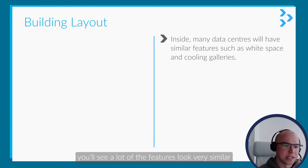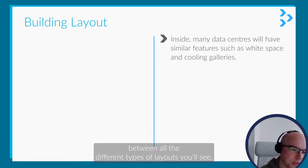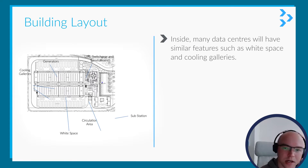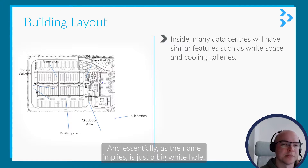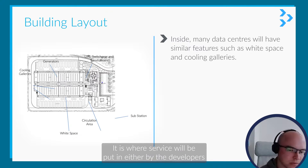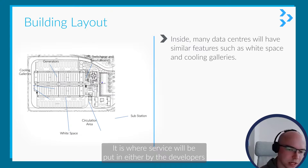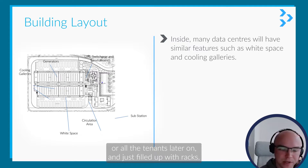Once you start getting inside a data center, you'll see a lot of features look very similar between all the different types of layouts. Starting with the white space — this is really where the servers are kept, and as the name implies, it's just a big white hall. It is where servers will be put in, either by the developers or the tenants later on, and filled up with racks.